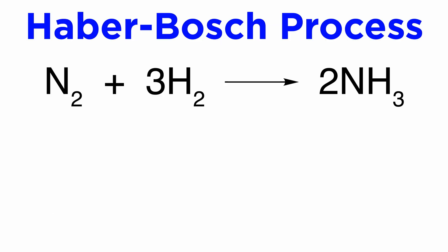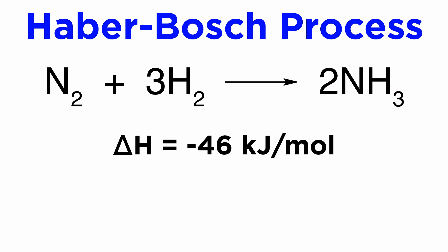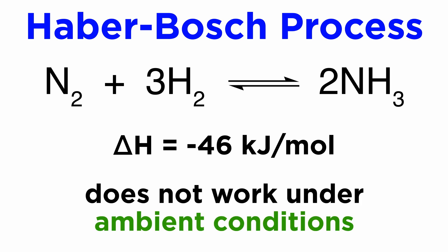The basic equation for the process is as follows: one molecule of nitrogen reacts with three molecules of hydrogen to yield two ammonia molecules. The reaction is exothermic under ambient conditions, with a delta H at room temperature of negative 46 kilojoules per mole, and therefore the equilibrium favors formation of ammonia. Unfortunately, the reaction does not work under ambient conditions even in the presence of the best metal catalysts.